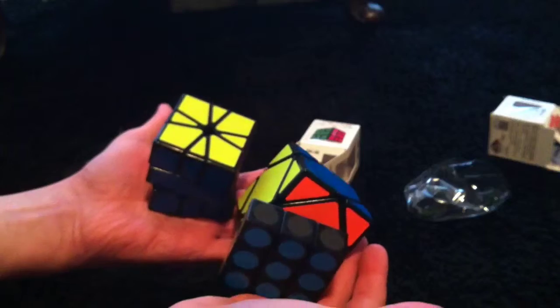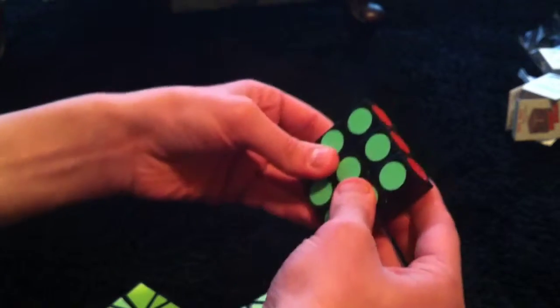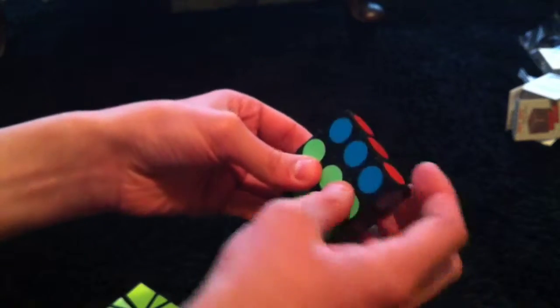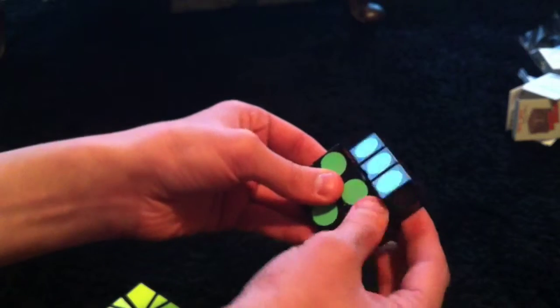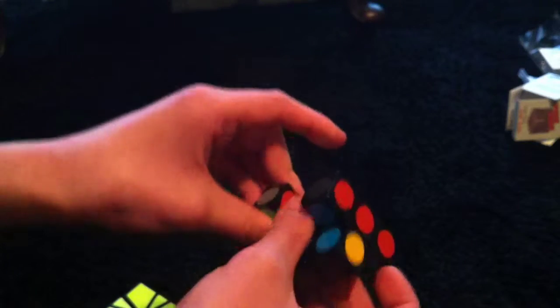So I got all three things opened. I'm just going to show you how this one works and what I mean by it shapeshifts. Don't know if I told you that already, but see how it goes here and it can turn, but look at this. I do this and then I can do that. See that? I don't want to mess it up, but that's what I mean by it can shapeshift. It doesn't follow the normal rules that a normal 3x3 would.